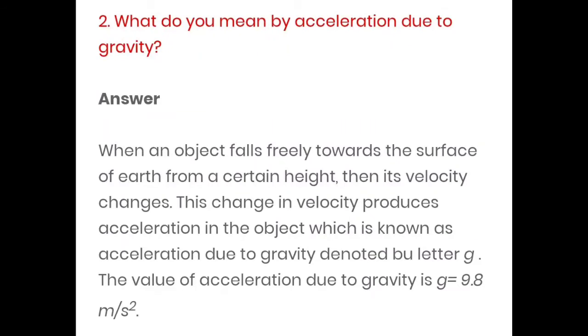See the second question: what do you mean by acceleration due to gravity? Answer: when an object falls freely towards the surface of earth from a certain height, then its velocity changes. This change in velocity produces acceleration in the object which is known as acceleration due to gravity, denoted by letter g. The value of acceleration due to gravity is g = 9.8 meter per second squared.